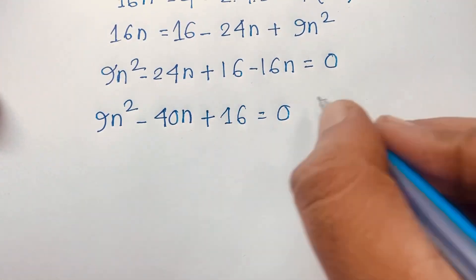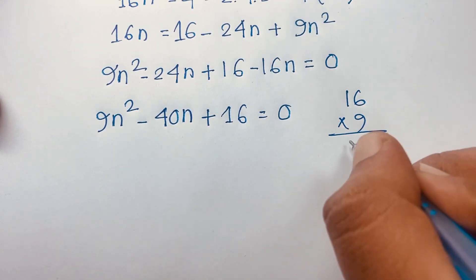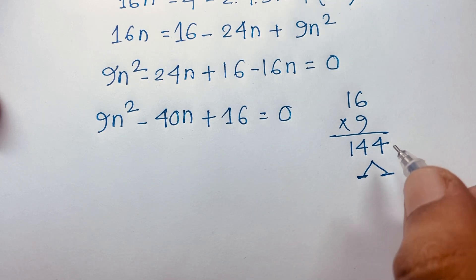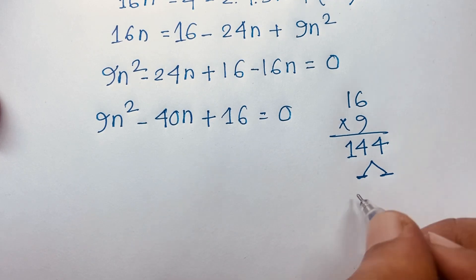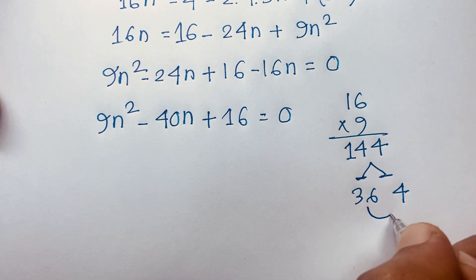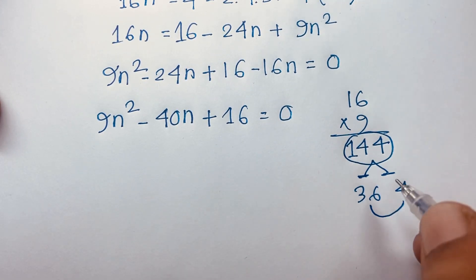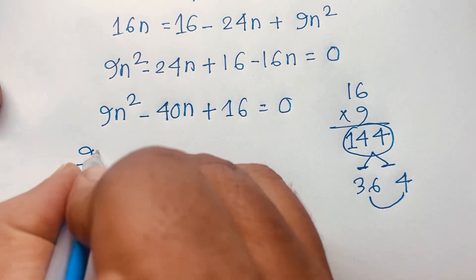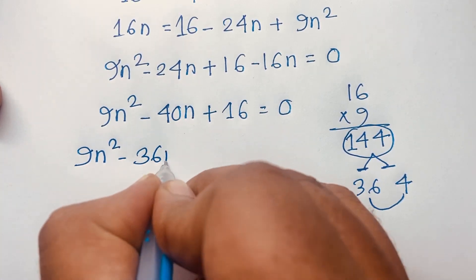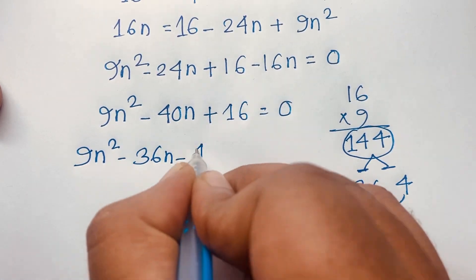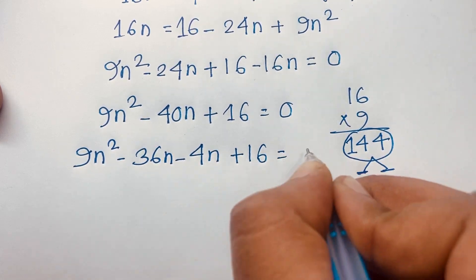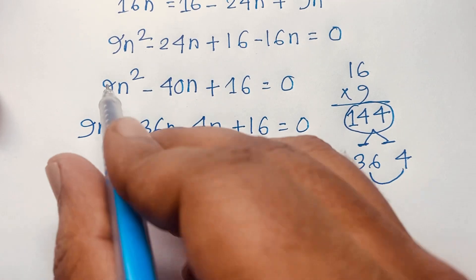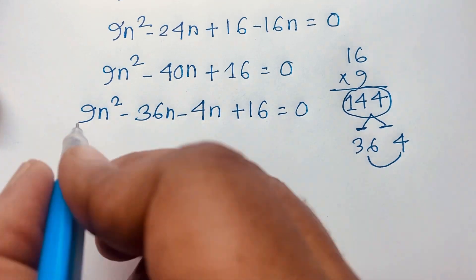We factor using the middle-term splitting method. We need two numbers that multiply to 16 × 9 = 144 and add to 40. Those numbers are 36 and 4, since 36 × 4 = 144 and 36 + 4 = 40.